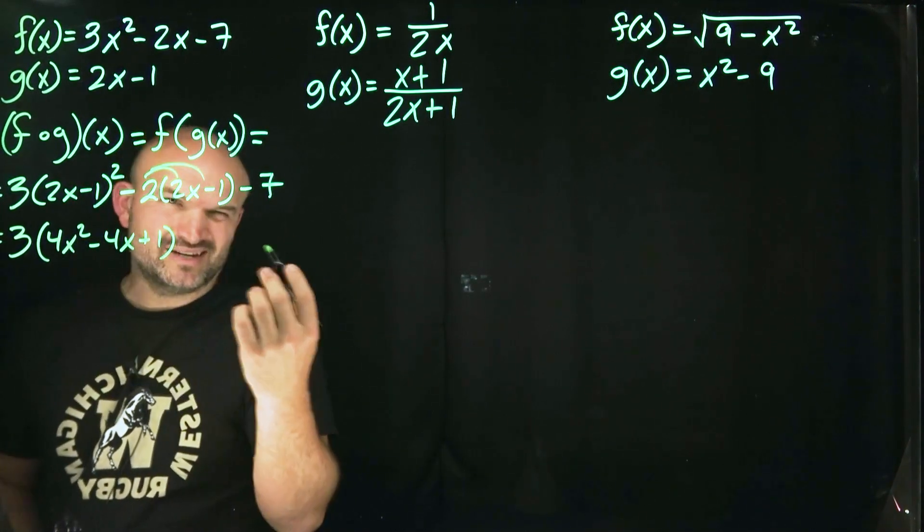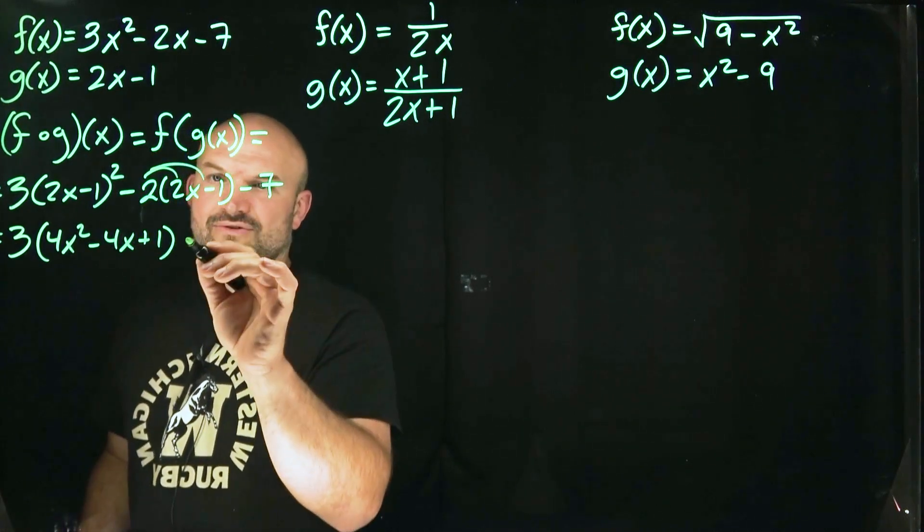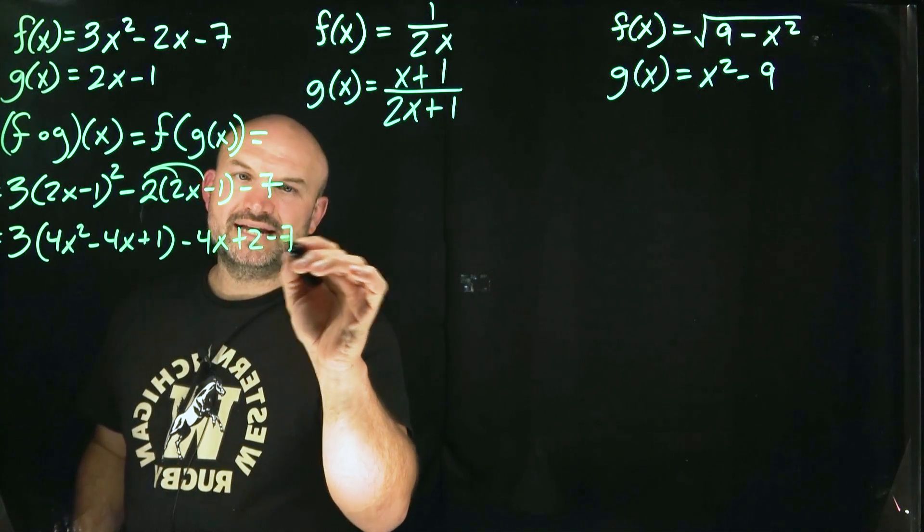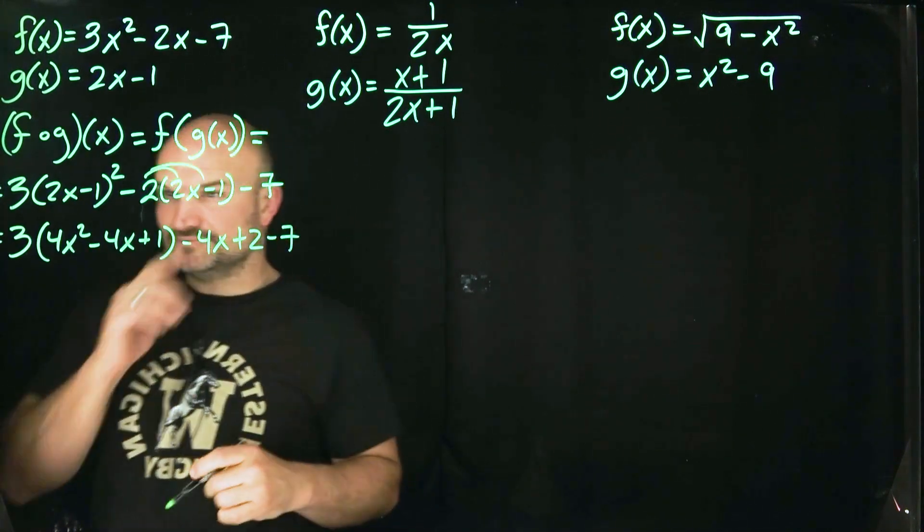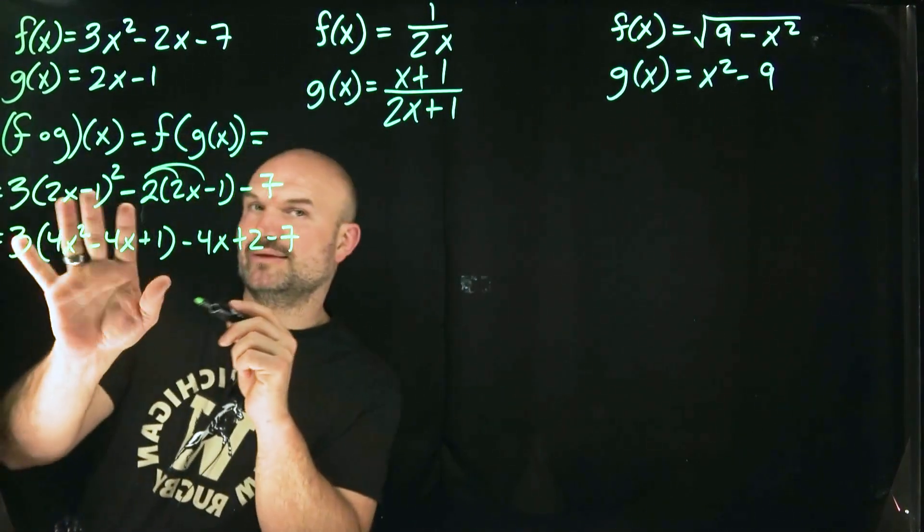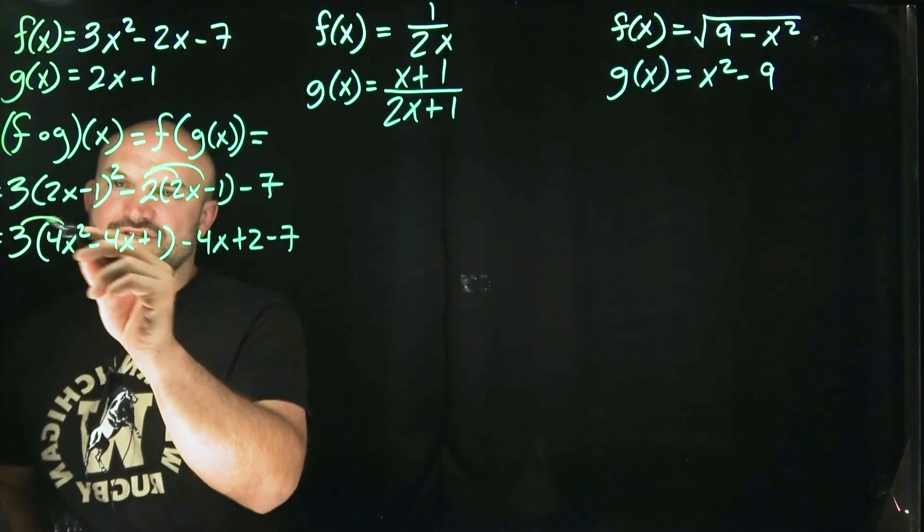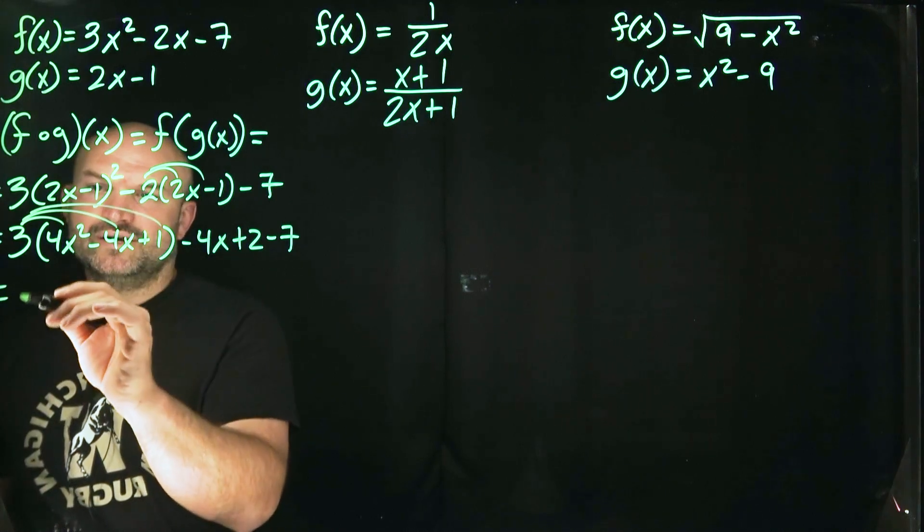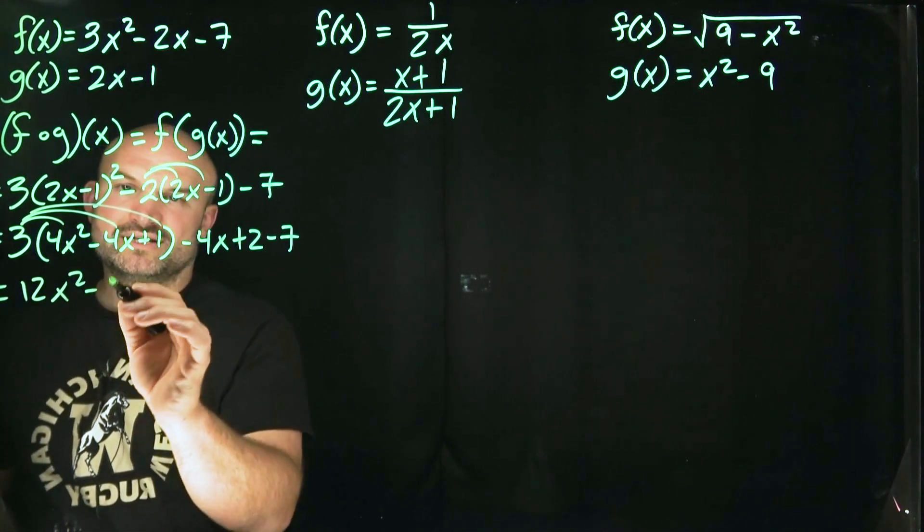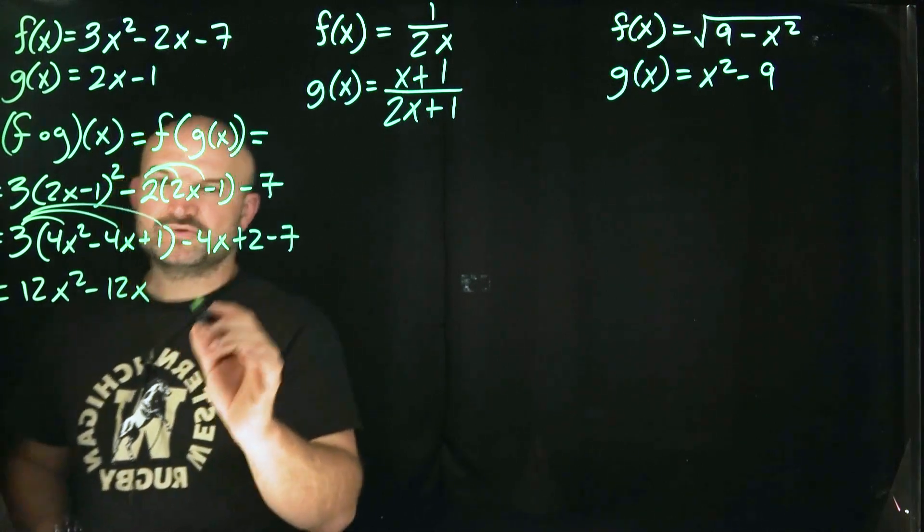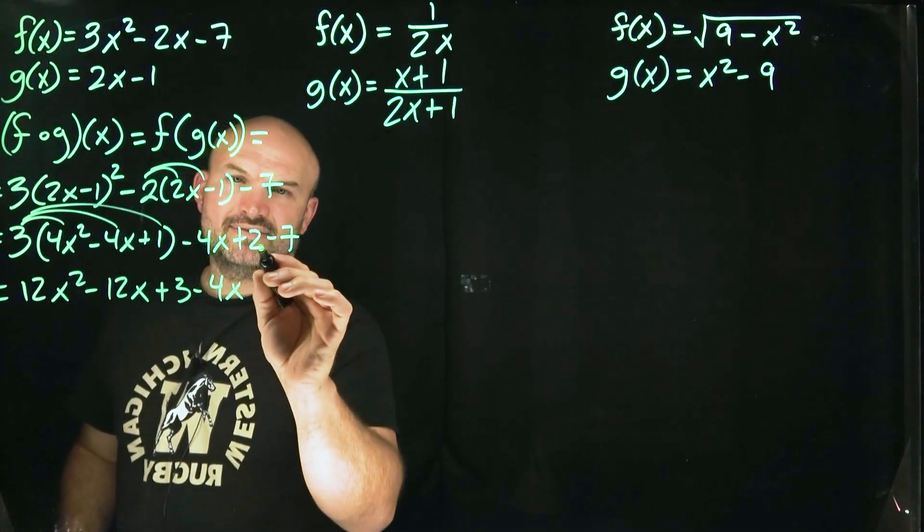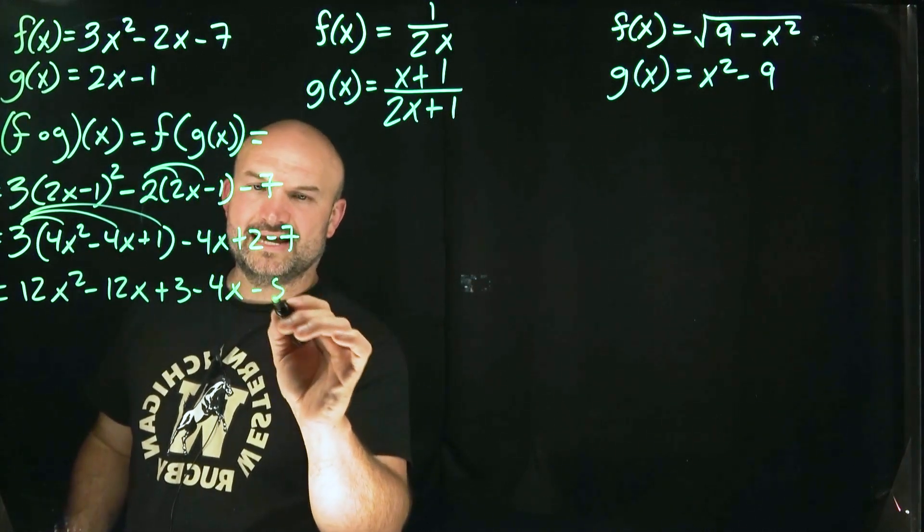And then here, you can apply distributed property, I can show my work there. That is going to be a minus a 4x plus 2 minus 7. I'll do the simplifying at the end. Here, I have distributed property. Make sure it's very important to leave these in parentheses, because this 3, you need to multiply by everything. So 3 times a 4x squared, that's going to be a 12x squared. 3 times negative 4 is a negative 12x. 3 times 1 is going to be a positive 3. And then we have a minus a 4x. And then 2 minus a 7 is going to be a negative 5.